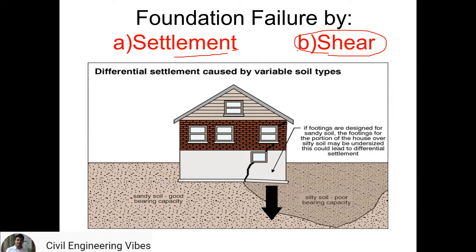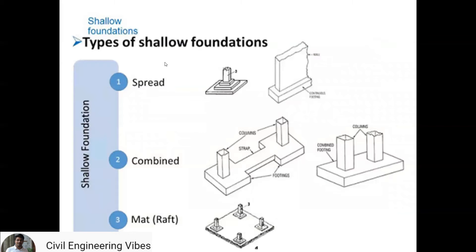Settlement and shear are the two key characteristics. As seen in this diagram, if the footings are designed for sandy soils, the footing for the portion of the house over silty soils may be undersized — this could lead to differential settlements. The choice of a particular type of foundation depends on the magnitude of the load, the nature of the subsoil, the nature of the superstructure, and its specific requirements.